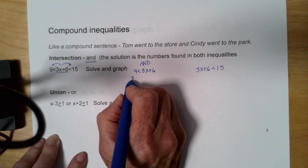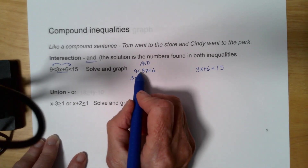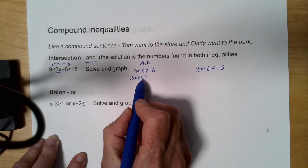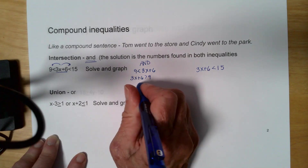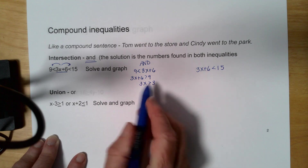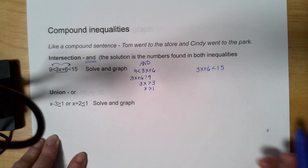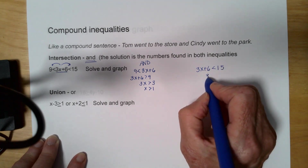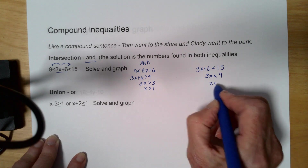I'm going to switch sides so I have my variable on the left side. Notice the wide part of the inequality sign is next to 3x plus 6 — it also has to stay next to it when you switch sides. I subtract 6 from both sides, so I have 3x is greater than 3, then divide by 3, so x is greater than 1. Over here I subtract 6 so I have 3x is less than 9, then divide by 3.